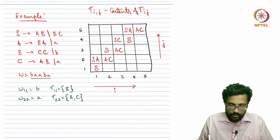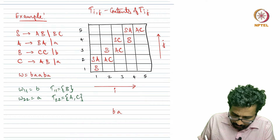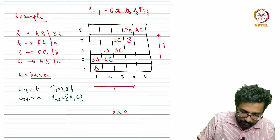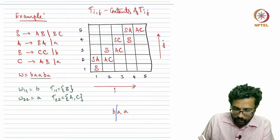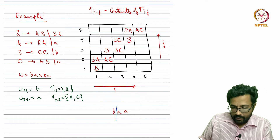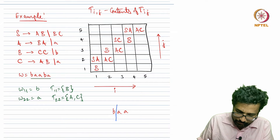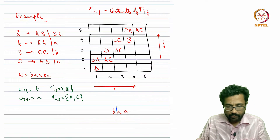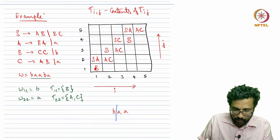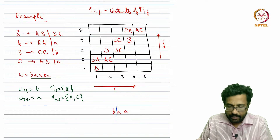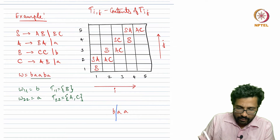Now let us move to strings of length 3, starting with cell T[1,3], which corresponds to the substring b,a,a. There are two ways to split it. The first split is T[1,1] and T[2,3]: T[1,1] contains B and T[2,3] contains B. So we check: is there a variable that gives B,B? The answer is no, so we cannot fill anything from this split.